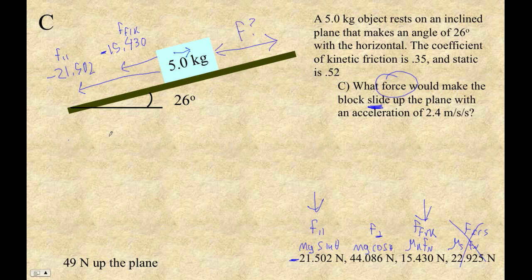And now we just set it up. We're doing F equals ma. And the sum of the forces are negative 21.502 plus negative 15.430 plus F equals 5.